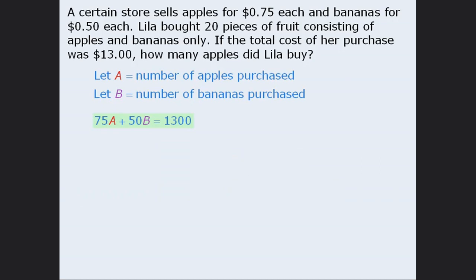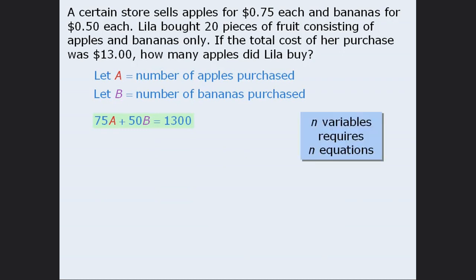At this point we have an equation, but we can't yet solve it for A since the equation has two variables. There's a rule that says if you have N variables, then you need N equations if you want to solve for those variables. So since we have assigned two variables, A and B, we need to write a second equation to accompany the first. We can use the information that tells us there are 20 pieces of fruit altogether, so we can write the equation A plus B equals 20.